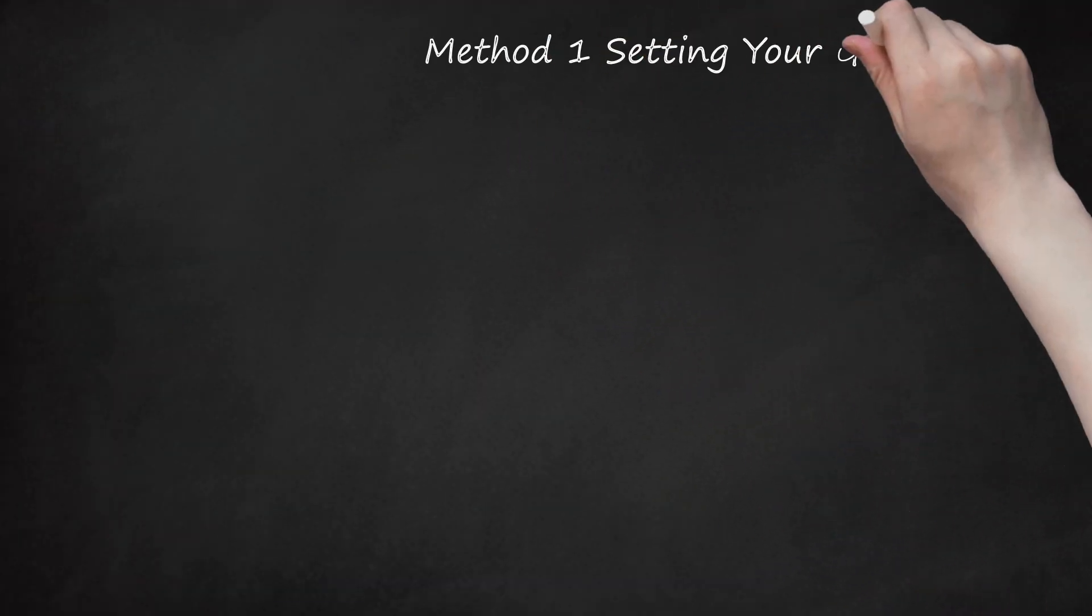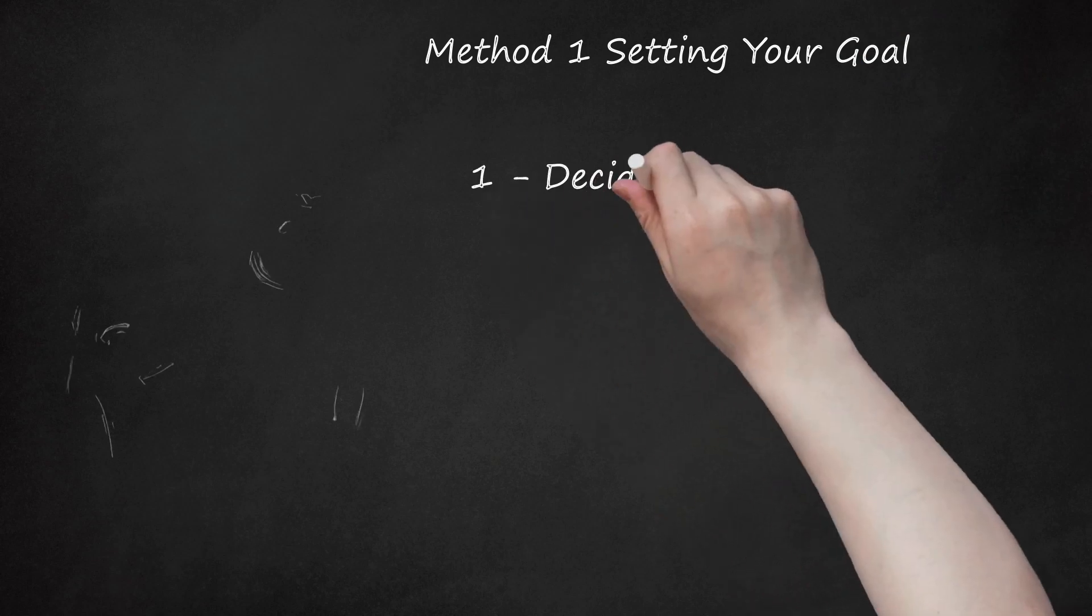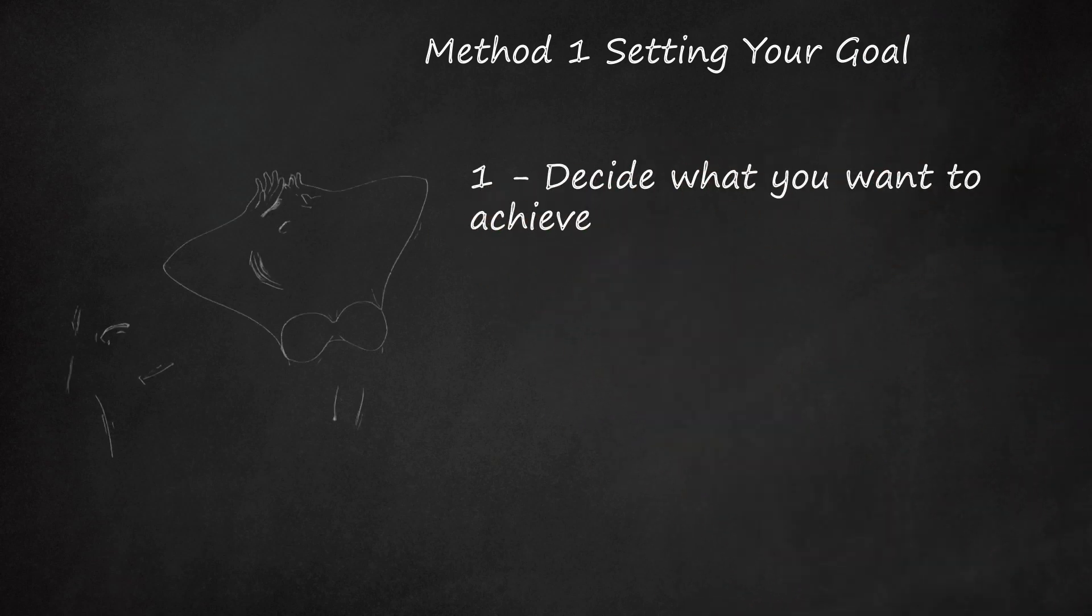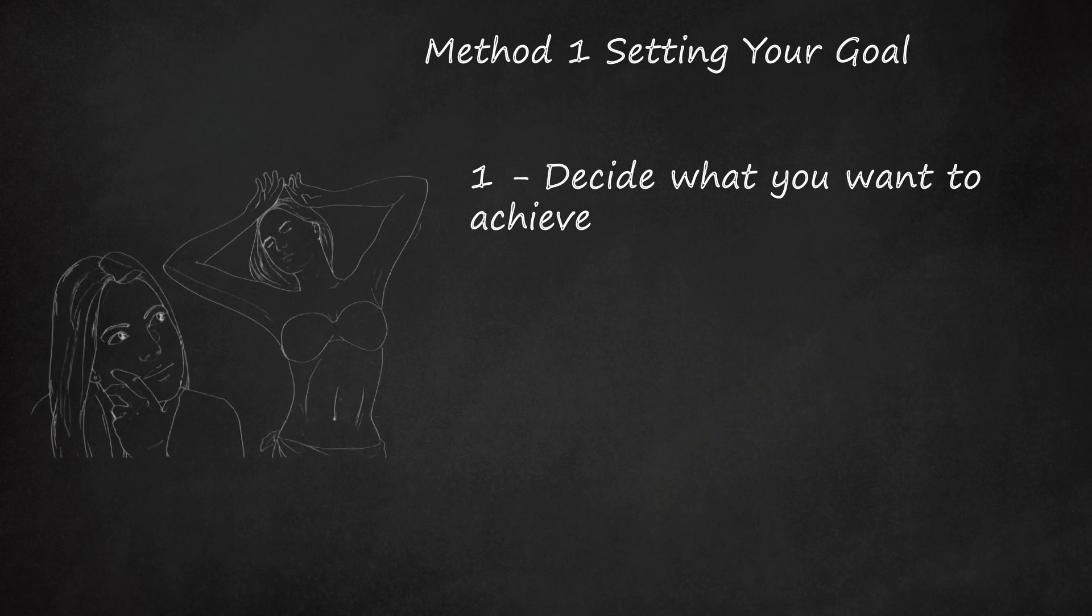Method 1: Setting Your Goal. 1. Decide What You Want to Achieve. Success in a 16-Week Challenge depends on picking a goal that is important to you. Think carefully about what you want to achieve before you begin. A 16-Week Challenge means intense work toward a goal over the challenge period. Because of this, you must be certain it is something you are committed to. Assess your level of commitment and be sure you are willing to dedicate the time and effort before you begin.